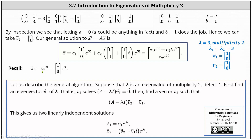Recalling that X1 equals eigenvector V1 times e to the 3t, the general solution is X equals C1 times (1, 0) times e to the 3t, plus C2 times the sum of V2 — which is (0, 1) — and V1 — which is (1, 0) — times t, all times e to the 3t. To describe the general algorithm: suppose lambda is an eigenvalue of multiplicity 2 and defect 1. First find eigenvector V1 satisfying (A minus lambda I) times V1 equals zero, then find V2 satisfying (A minus lambda I) times V2 equals V1. This gives two linearly independent solutions used to form the general solution.